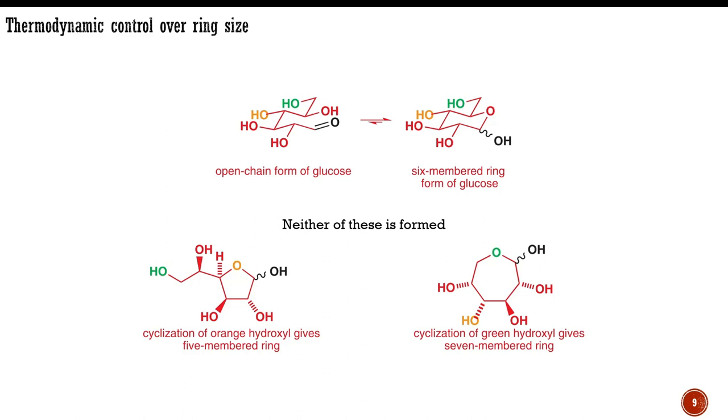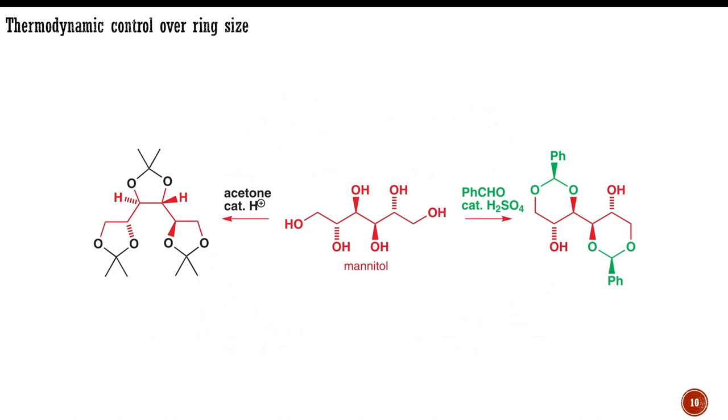For similar thermodynamic reasons, it does not exist as a seven-membered ring, even though you can draw a reasonable structure for it. Thermodynamic control is important in other ways in carbohydrate chemistry because control over ring size allows selective protection of the hydroxyl groups of sugars. Compare these two reactions.